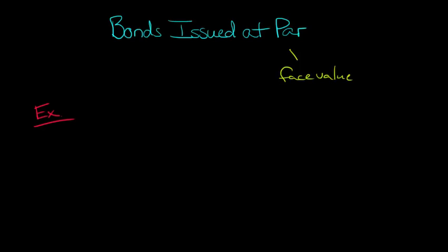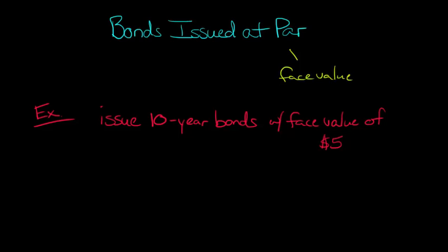In our example, let's say our firm issues 10-year bonds—by 10-year bonds, I mean the maturity will be 10 years from now—with a face value of $500,000. If you're wondering what face value means, we're just saying that when the bond becomes mature, we're going to have to repay the lender $500,000.